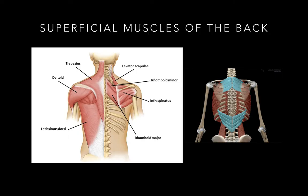Now we're going to cover the superficial muscles of the back. The superficial muscles of the back have three different layers. The first layer consists of musculus trapezius and musculus latissimus dorsi. The next layer is musculus rhomboideus major and minor, and also musculus levator scapula. The third layer is musculus serratus posterior superior and musculus serratus posterior inferior.